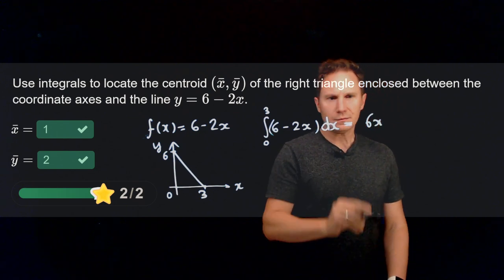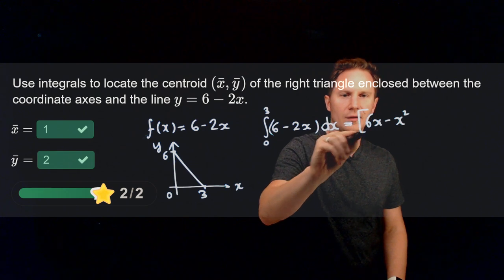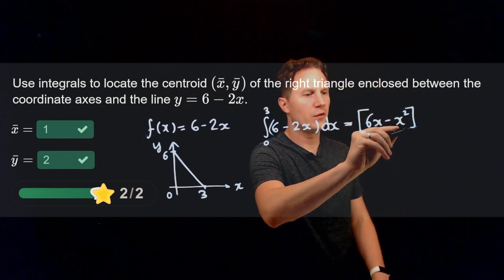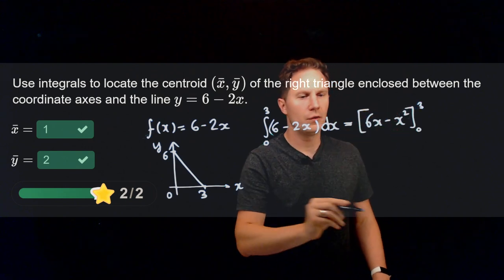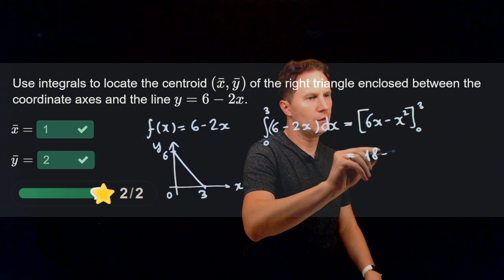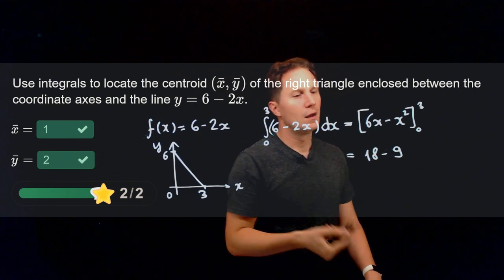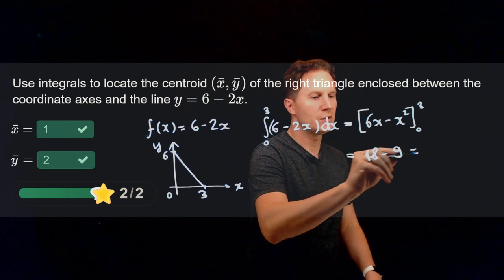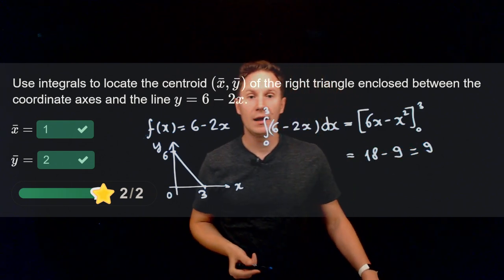So that's 6x minus x squared for an antiderivative. Its change as x goes from 0 to 3 is 18 minus 9 from which we need to subtract 0, so we get 9 for this integral.